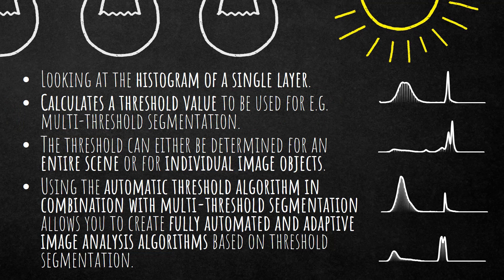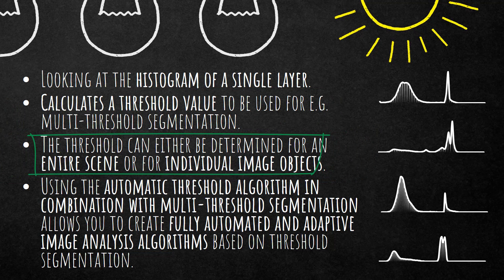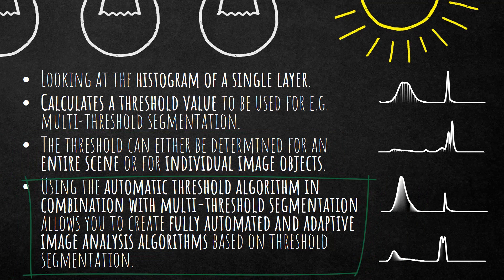You can compute this threshold on the entire scene or on individual objects. The combination of the automatic threshold algorithm and the multi-threshold segmentation allows you to create a fully automated and adaptive image analysis workflow. So you can apply it on a different image or scene and it will compute a different threshold and based on that it will create the image objects.